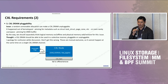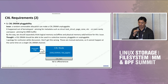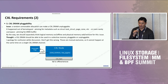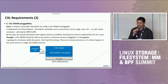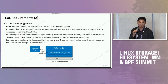The third requirement is about CXL DRAM pluggability, which we discussed a lot on the thread. The issue: a random unmovable allocation has made the CXL DRAM device unpluggable. It happened out of kernel space — specifically, kernel space allocation was pinning kernel space metadata which is not movable, such as struct task_struct, struct page, or zone.